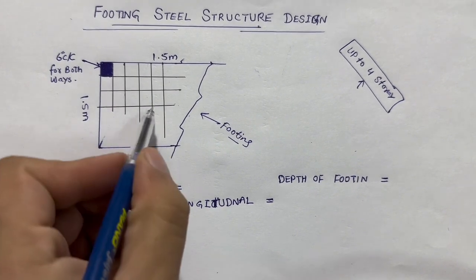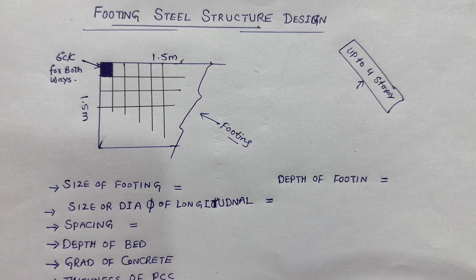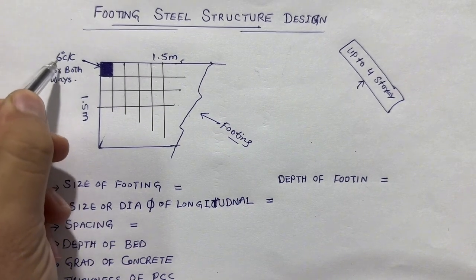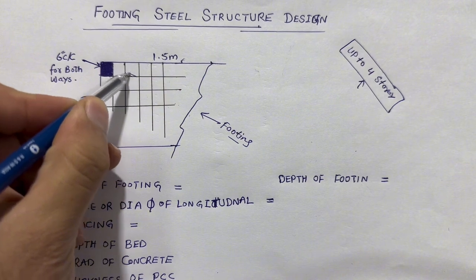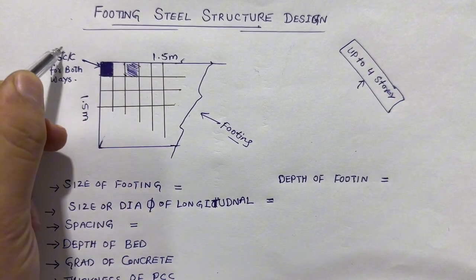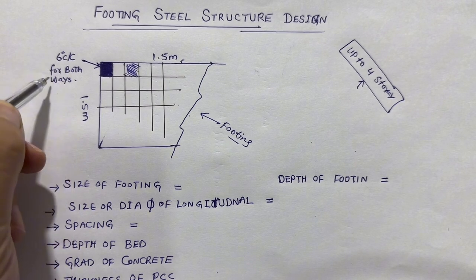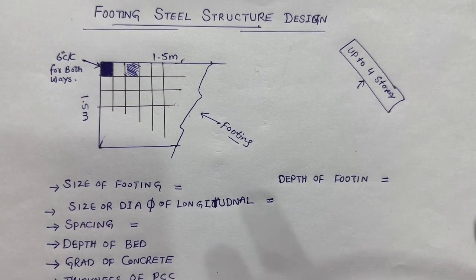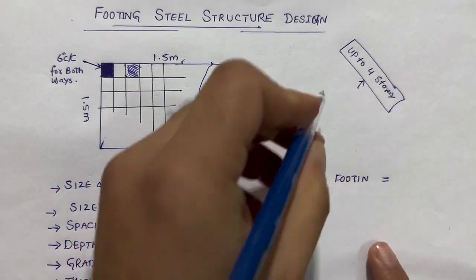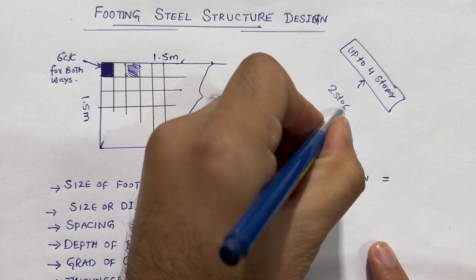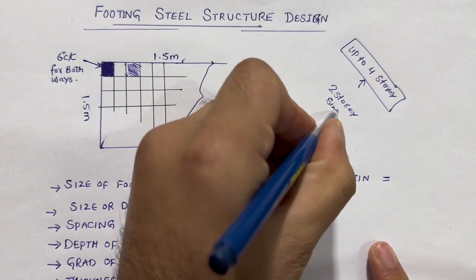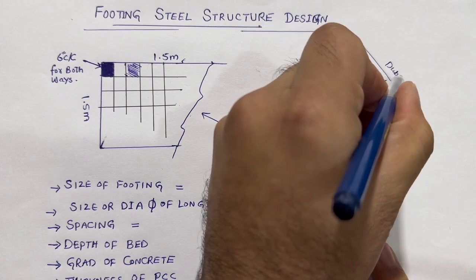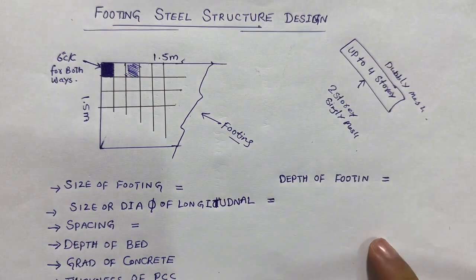Next, here you can see we have main bars and distribution bars. The spacing of main bars and distribution bars should not be more than 6 inches center to center for both directions — you can say main bars and distribution bars. Use doubly mesh for 4 storey. If you are using up to 3 storey or 2 storey, use singly mesh. This is a very important point to know.